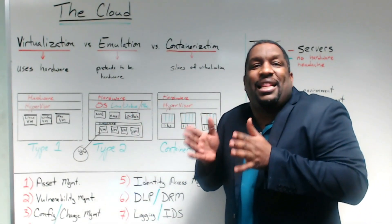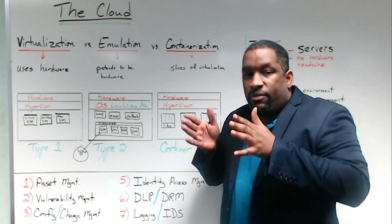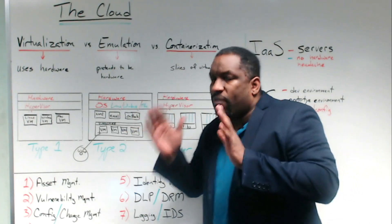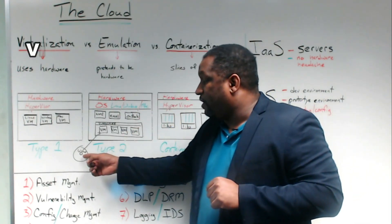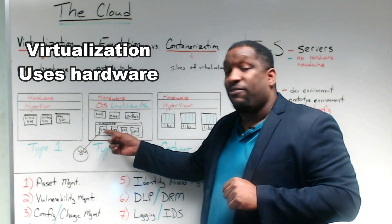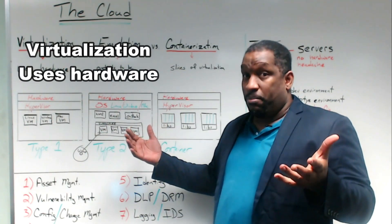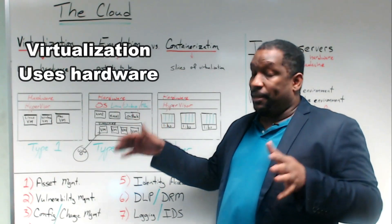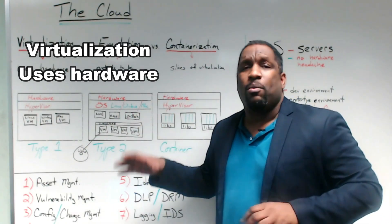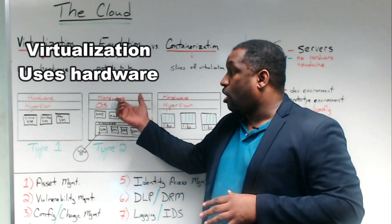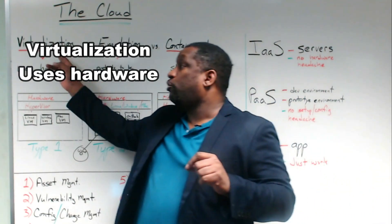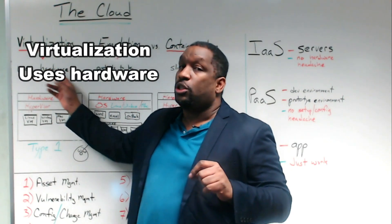VMware says, let me just allocate this little bit of the hardware — a little bit of memory, a little bit of processor — carve up some of that space, and then you can install your Linux in VMware. VMware is pretending to be an operating system: 'Hey, I'm a CD-ROM drive. Hey, I'm a network card.' But it carves off some of those resources. That's why virtualization uses hardware.